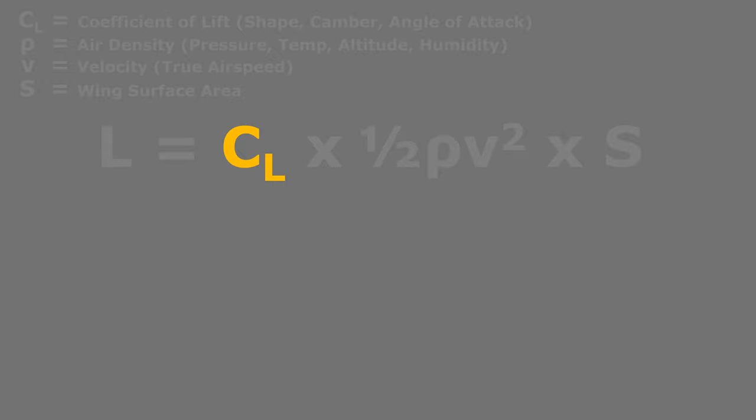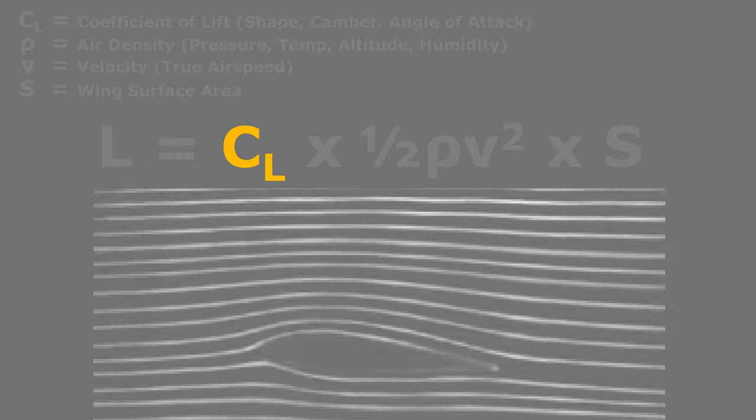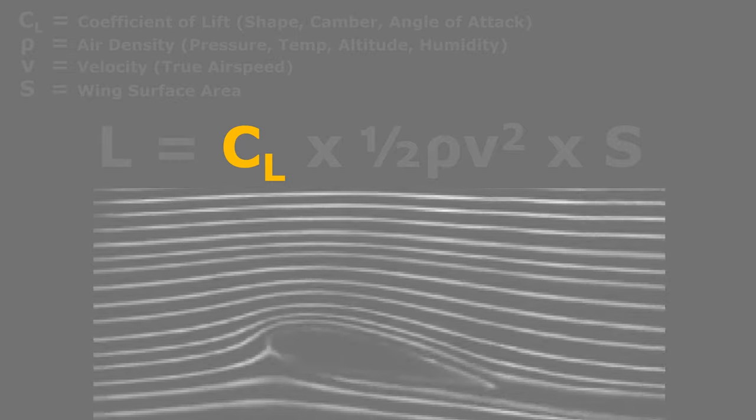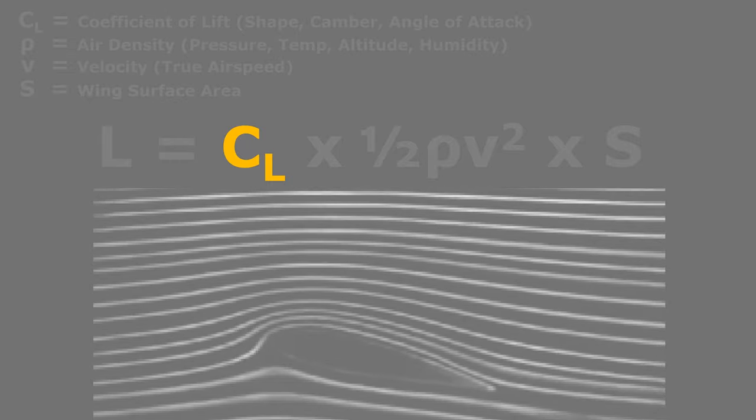The coefficient of lift is affected by wing shape and angle of attack. A wing at a low angle of attack is not deflecting a great deal of air downwards, but as that angle of attack is increased, a greater section of that air above the wing is able to be turned downwards, increasing lift.